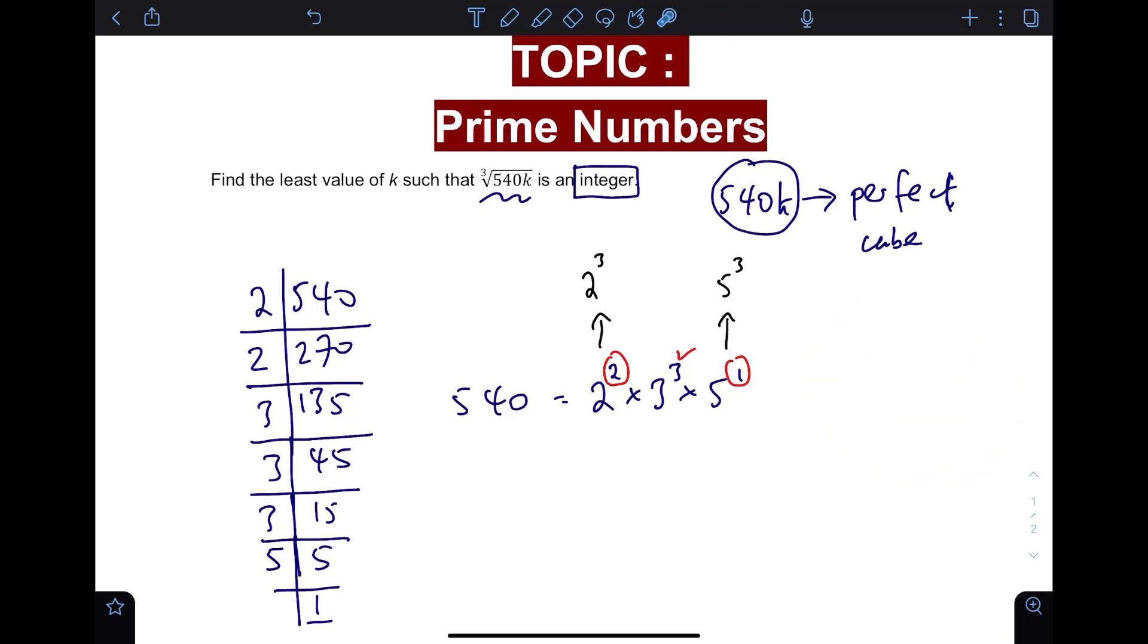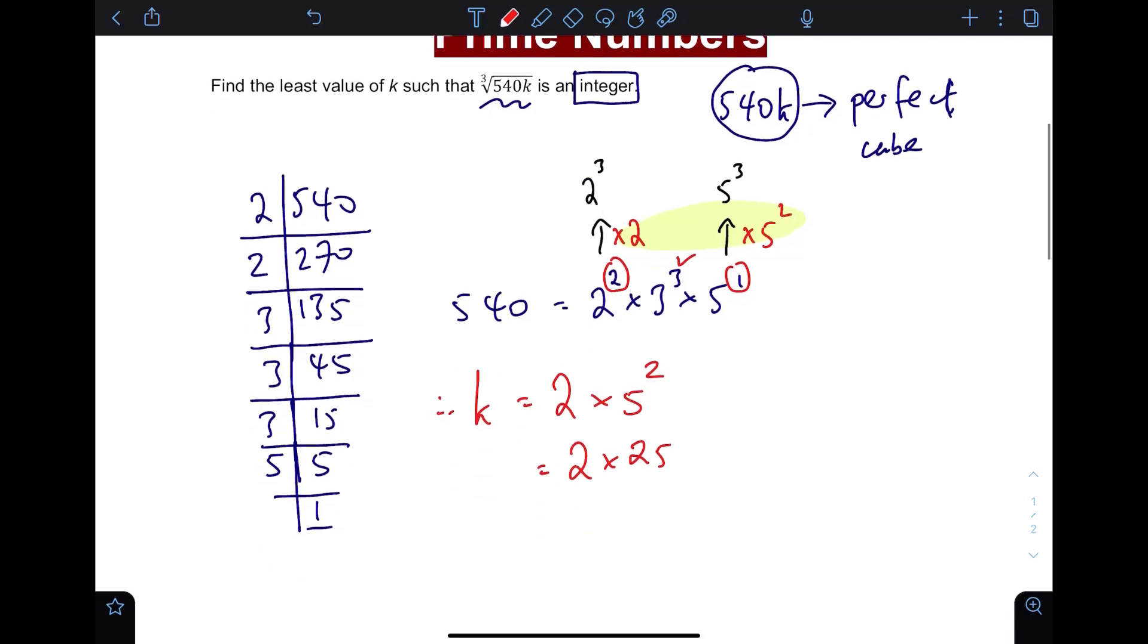So how do I move from two squared to two cubed? We have to times by another two. From five to the power one to five cubed, we have to times by another five squared. So all in all you need to times by two and another five squared. So that is essentially our value of k. Therefore k is just two times five squared, two times 25, which will give us a final k value of 50.